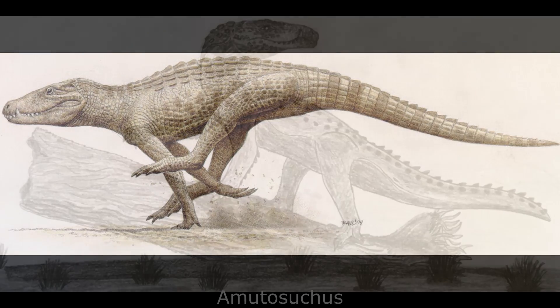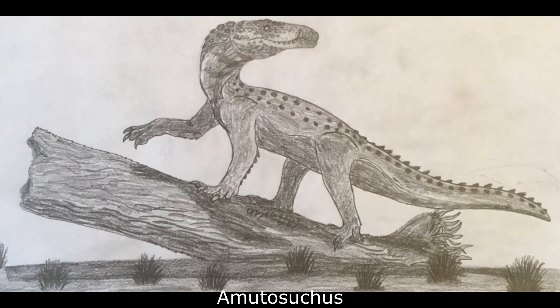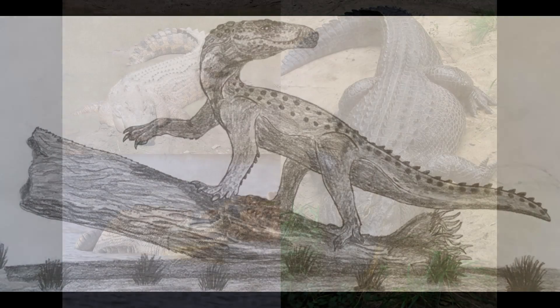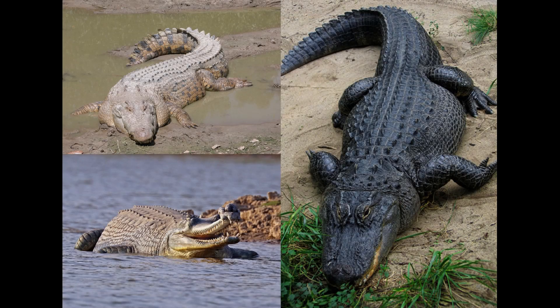One Sebechid, the 4-metre Amutasuchus, and an Iberosuchid, the 1.5-metre Sepulchrasuchus, were present at early Oligocene Fayoum, alongside a couple of genera of true crocodilians that would not have looked out of place in the Holocene of our world.